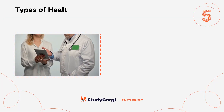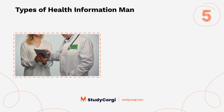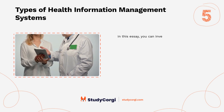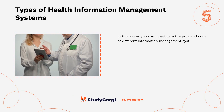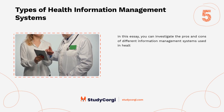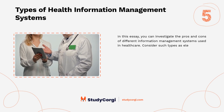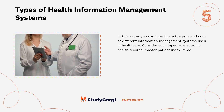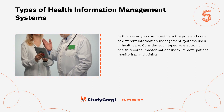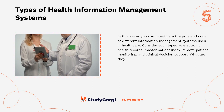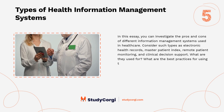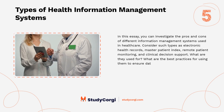Types of health information management systems: in this essay you can investigate the pros and cons of different information management systems used in healthcare. Consider such types as electronic health records, master patient index, remote patient monitoring, and clinical decision support. What are they used for, and what are the best practices for using them to ensure data privacy and security?